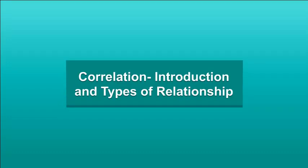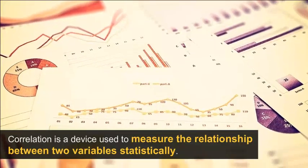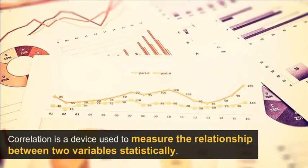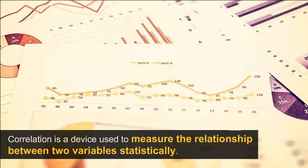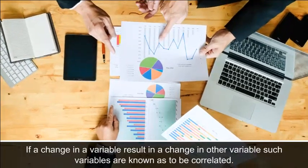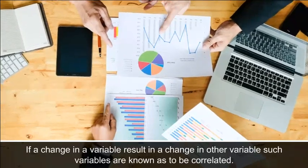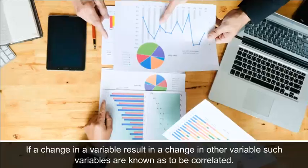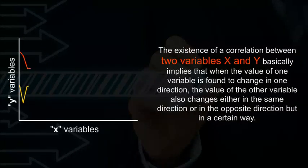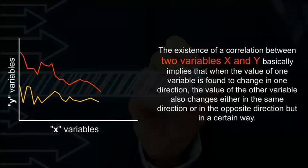Correlation is a device used to measure the relationship between two variables statistically. If a change in one variable results in a change in the other variable, such variables are known to be correlated. The existence of a correlation between two variables X and Y implies that when the value of one variable changes in one direction, the value of the other variable also changes either in the same or opposite direction.